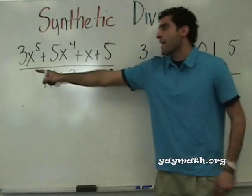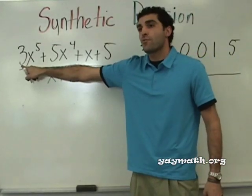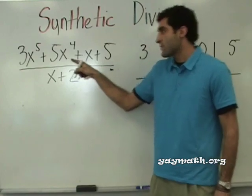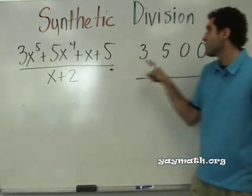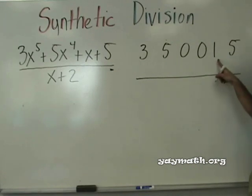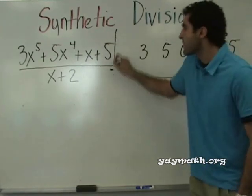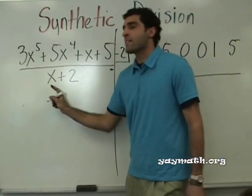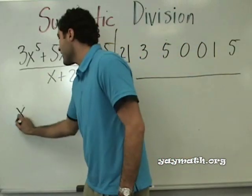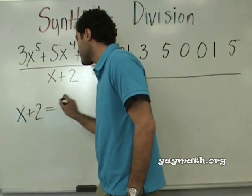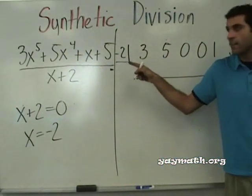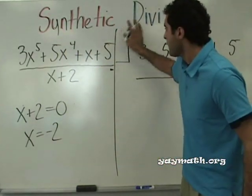Back to this — coefficients: 3, 5. We're missing x cubed, so zero x cubed. Zero x squared. Then 1 and 5. Number in the box: the denominator is set to zero, so x equals negative 2 — negative 2 goes inside the box.